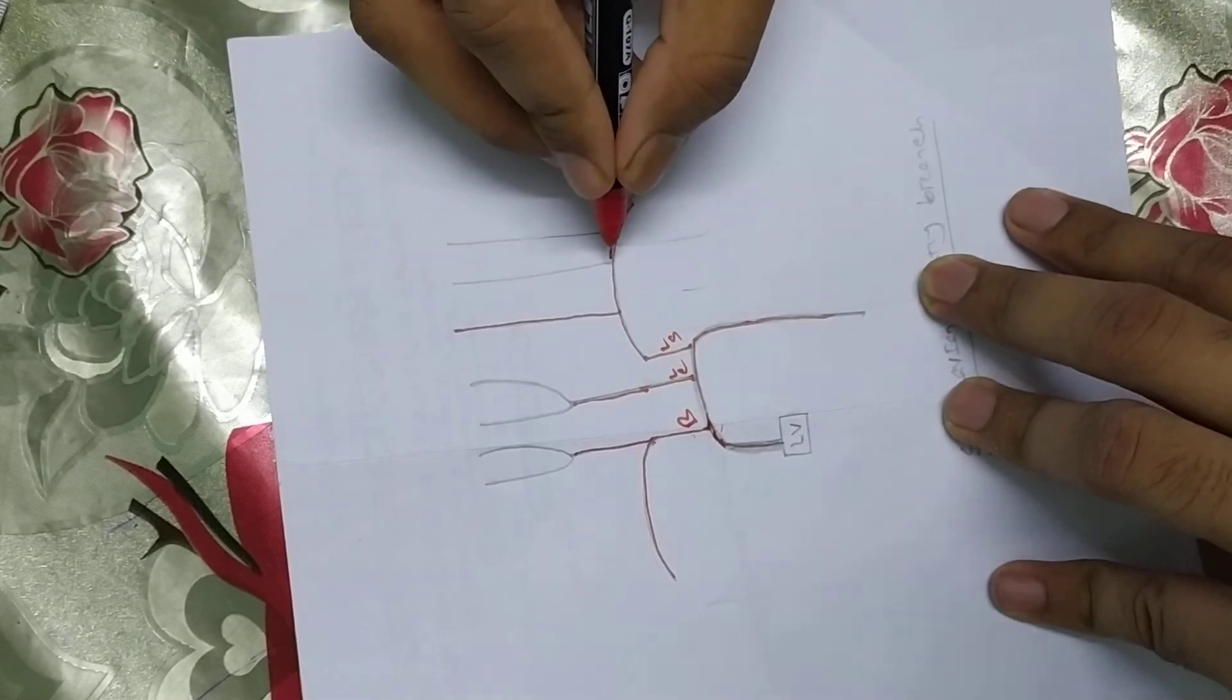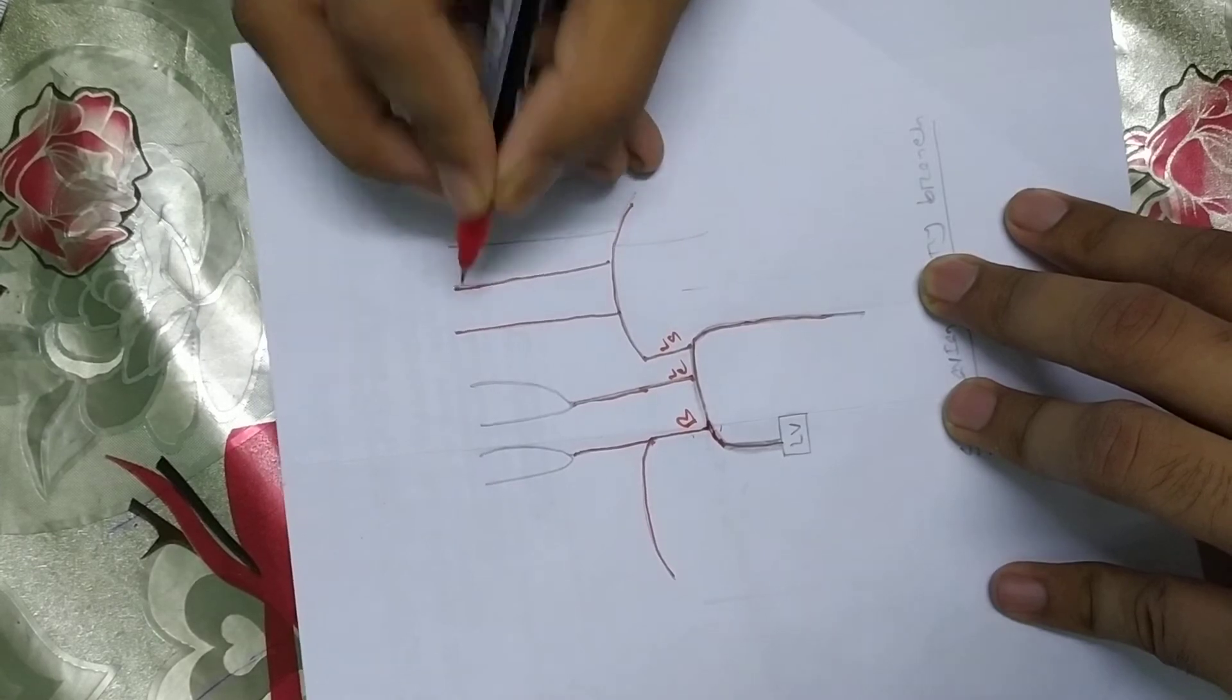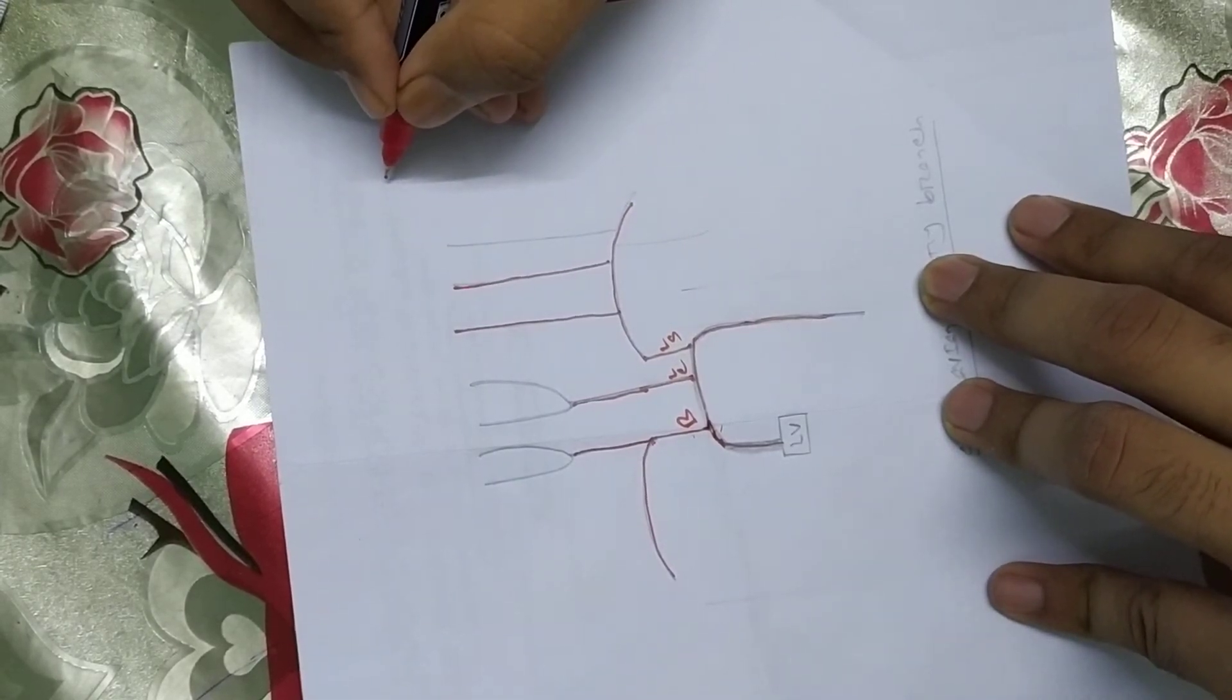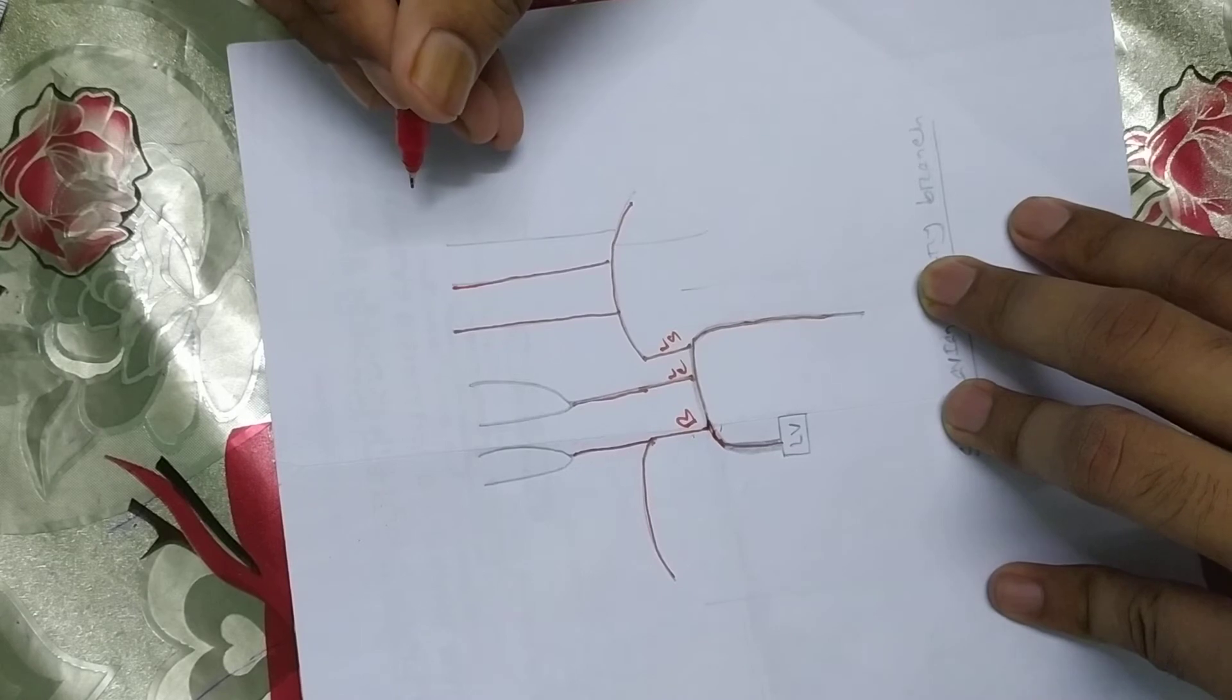Then we can see the thyrocervical trunk. This thyrocervical trunk has been given the thyroid gland. This is the inferior thyroid artery.